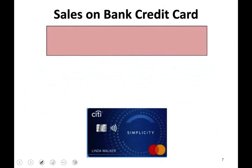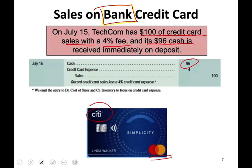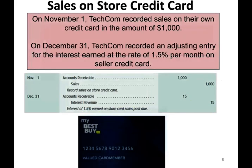Now let's look at sales on bank credit cards. This is different — here you are using the bank's credit card, like a Citibank MasterCard or Visa. On July 15th, Techcom has sales of $100 on credit card sales with a 4% fee. The credit card company charges a fee, and $96 cash is received immediately on deposit. So although they made the sale for $100, they only receive $96 because they pay a 4% fee. Therefore, we debit cash $96, credit sales $100, and the $4 difference is a credit card expense.